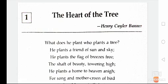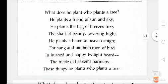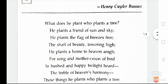So here we begin the important content of the poem: 'What does he plant who plants a tree? He plants a friend of sun and sky, he plants the flag of breezes free, the shaft of beauty towering high. He plants a home to heaven, a song that mother birds can sing, to light her trouble — heaven's harmony. These things he plants who plants a tree.'